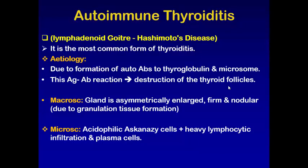Microscopically, there is a special cell called Askanazy cells — these are acidophilic cells found at the remnant of the damaged thyroid follicles. Also, we will have evidence of the autoimmune process: heavy lymphocytic infiltration and plasma cells.